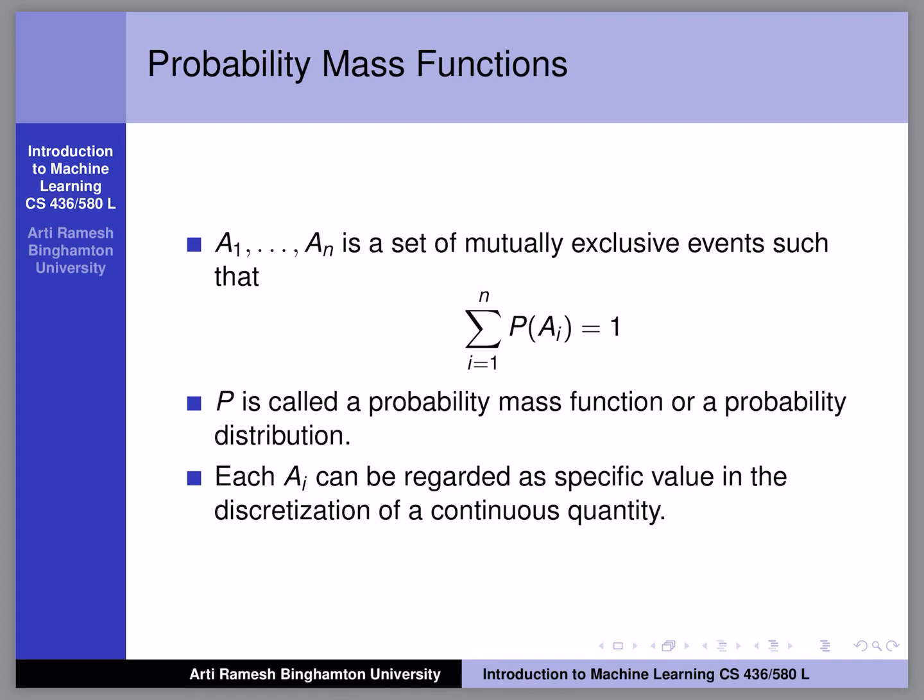Let a1 to an be a set of mutually exclusive events such that sigma i equals 1 to n, P of Ai equals 1.